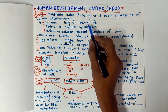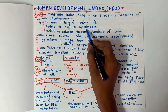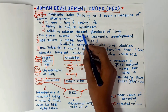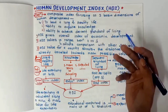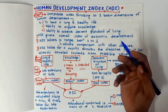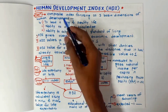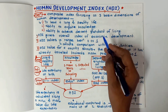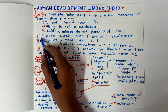The three basic dimensions are: first, to lead a long and healthy life; second, the ability to acquire knowledge; and third, the ability to achieve a decent standard of living. These are the three basic dimensions of human development, and HDI is the composite index focusing on these three dimensions.